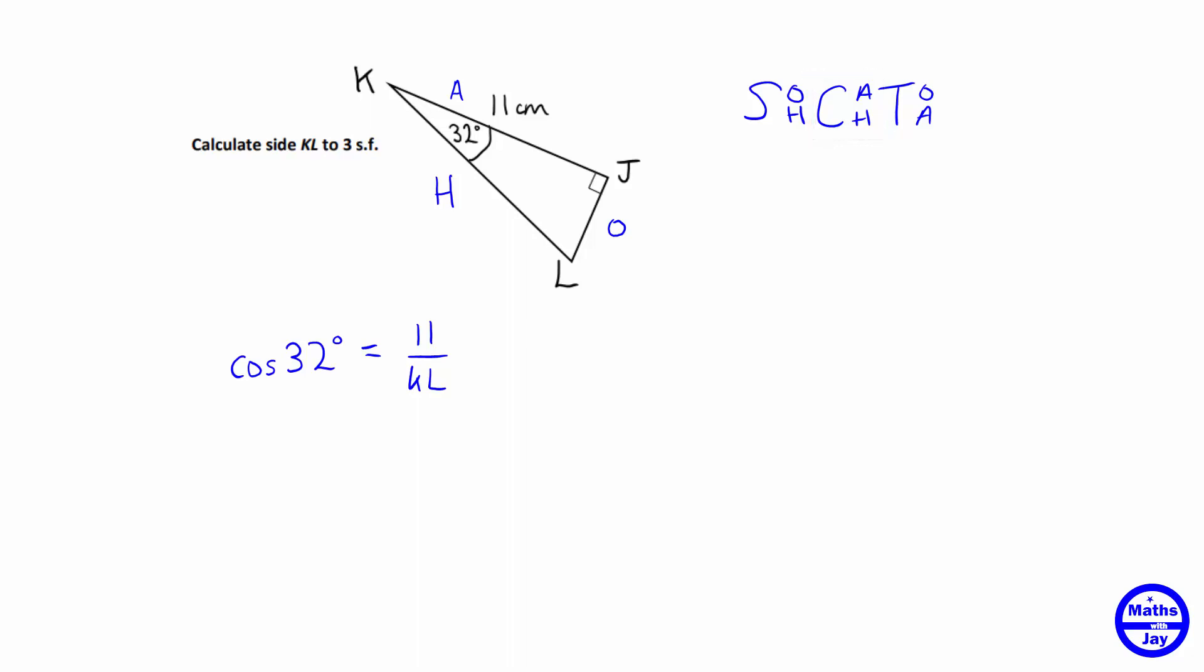And we want KL to be the subject of this little formula, so let's multiply across by it to get that KL multiplying cos 32 is 11. So that KL is 11 divided by the cosine of 32.